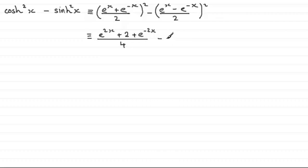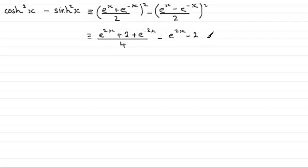Then we've got to subtract, and if I square out this bracket — taking the top first — we've got e to the x all squared which is e to the power 2x. The product of the two terms here is minus 1, double that and you get minus 2. Then we square the last term: minus e to the minus x all squared is going to be plus e to the power minus 2x.